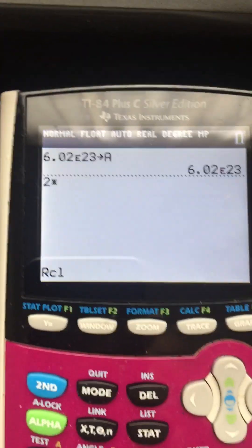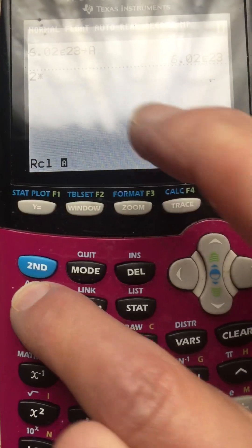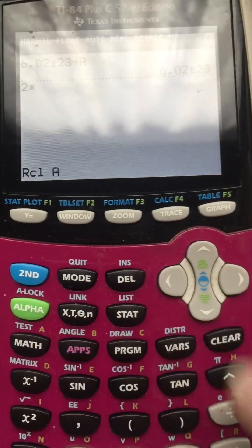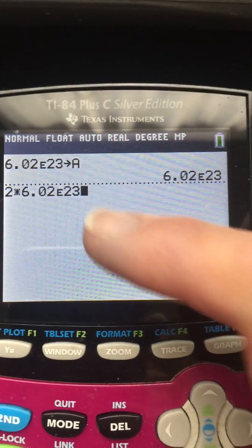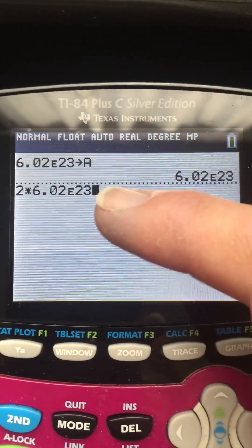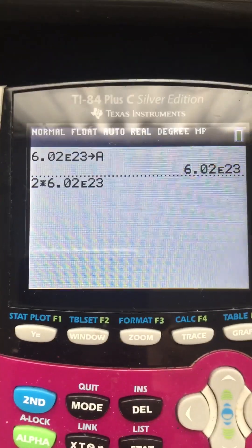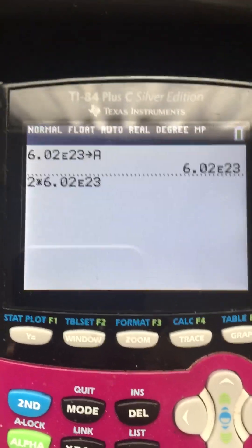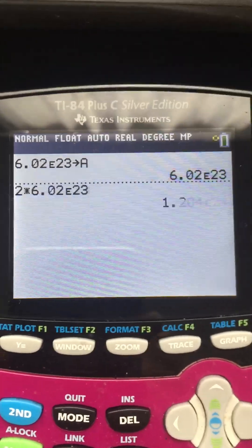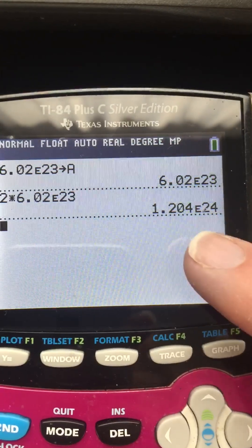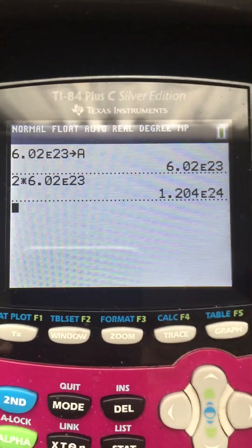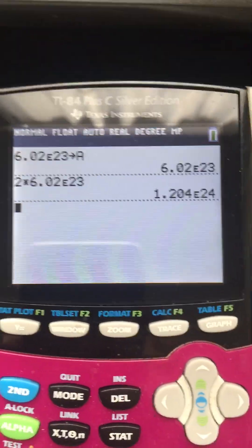So I will recall, and what I will recall is under alpha A, so I hit enter. And there it is, 6.02 times 10 to the 23rd. I hit enter, and there's the answer: 1.204 times 10 to the 24th.